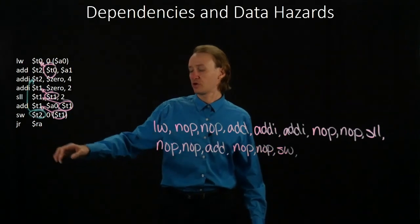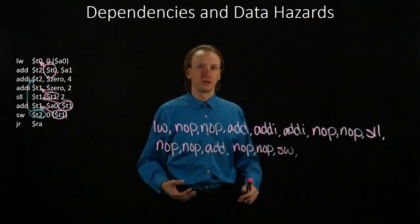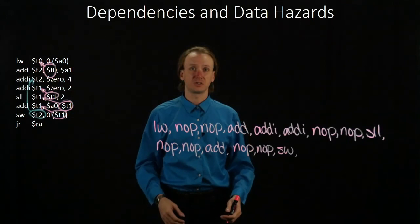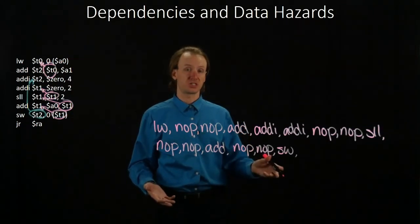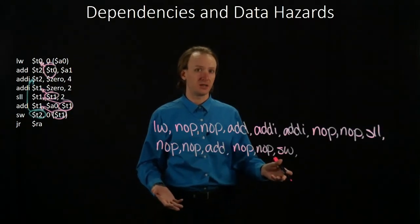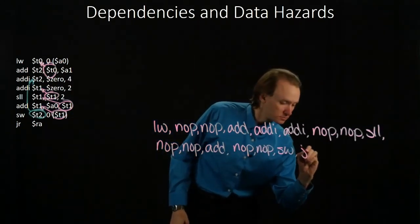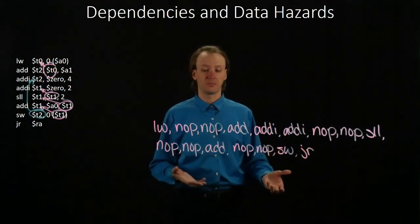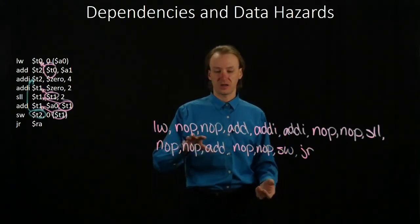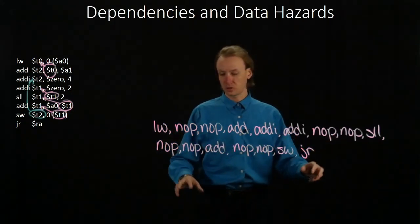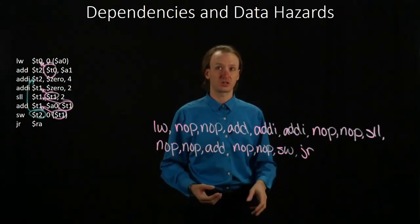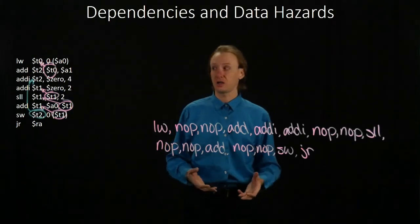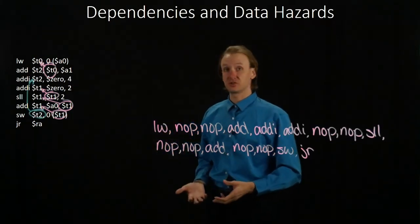Lastly, I have the jump register instruction. In this case, it's not dependent on any of the previous instructions, so I'm going to be able to run my jump register instruction immediately. So that's what our sequence of instructions will look like this time. We've added two, four, six, eight no-op instructions in total to work around the data hazards from this series of instructions.